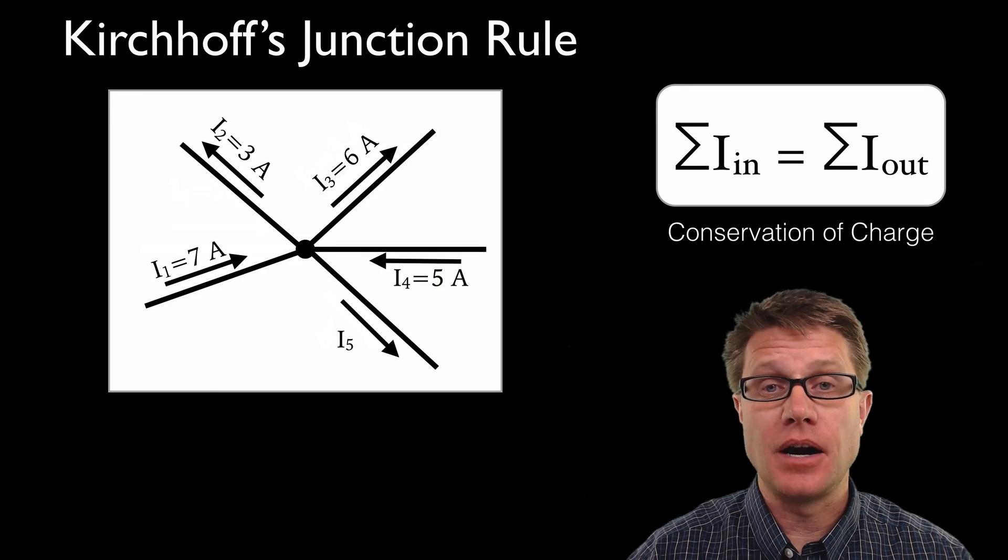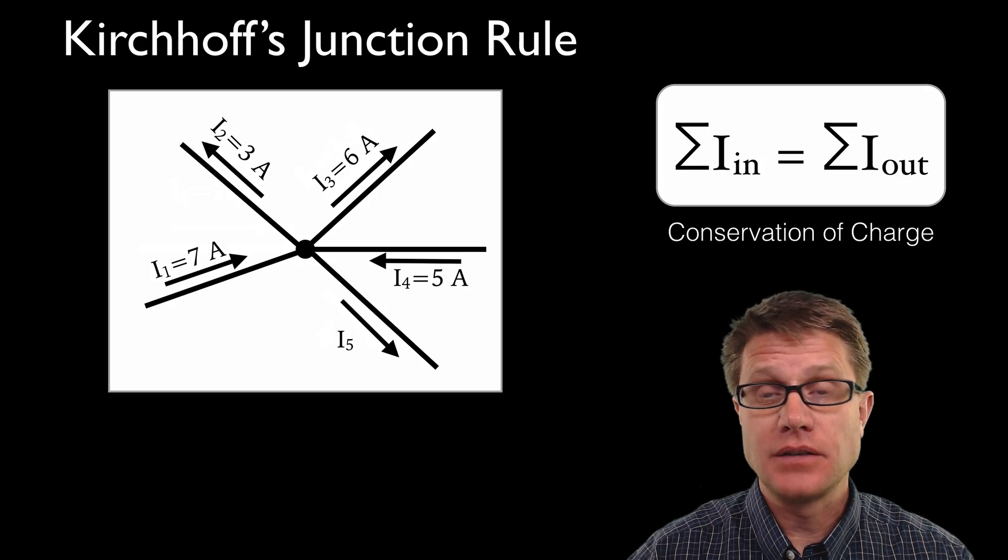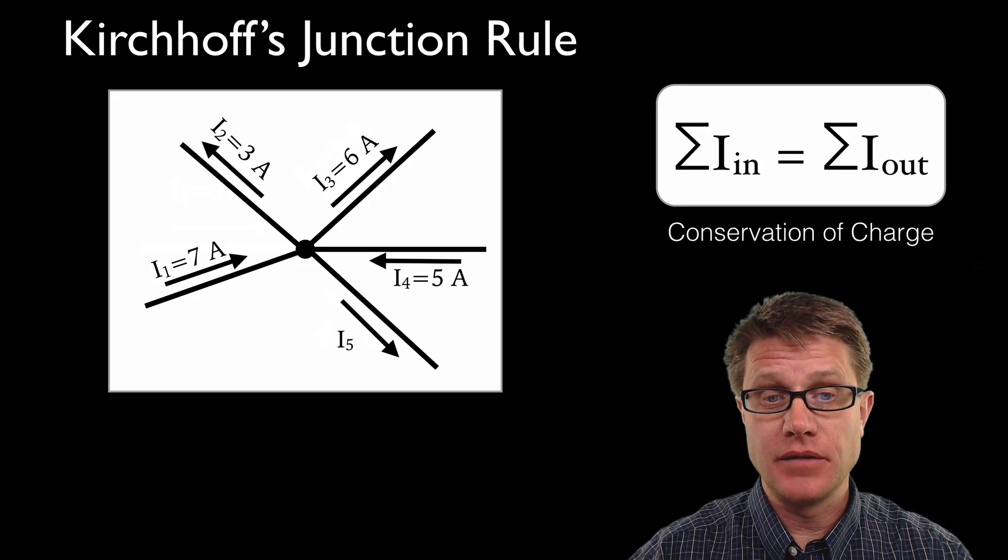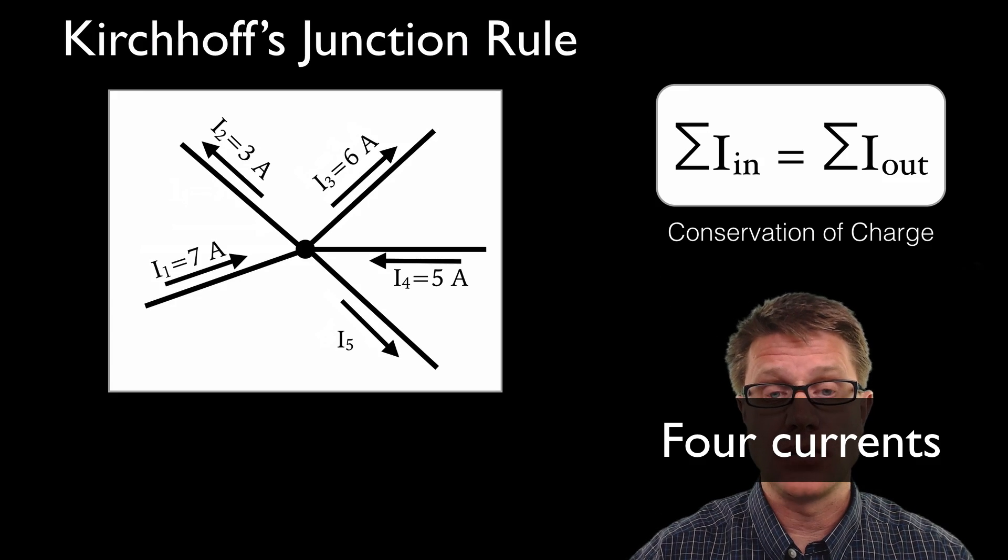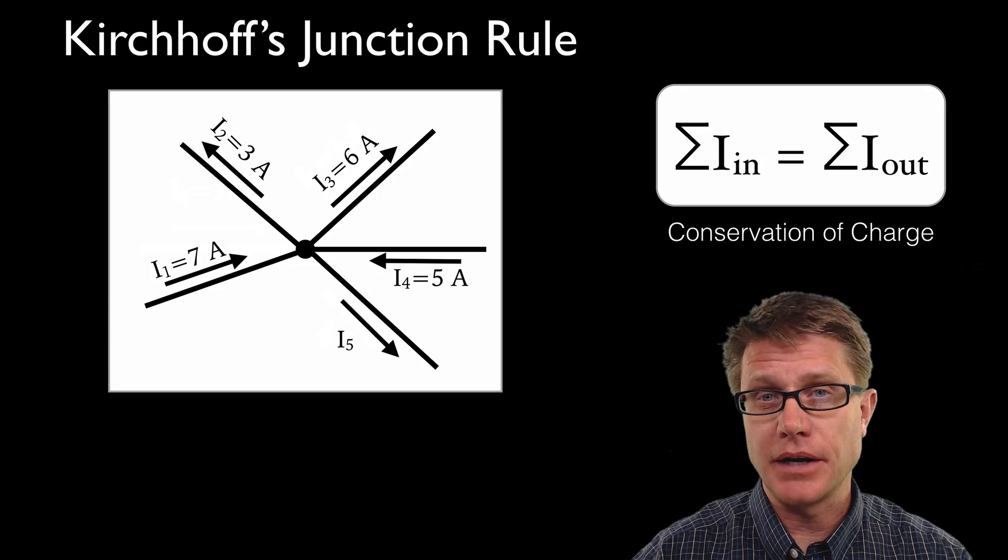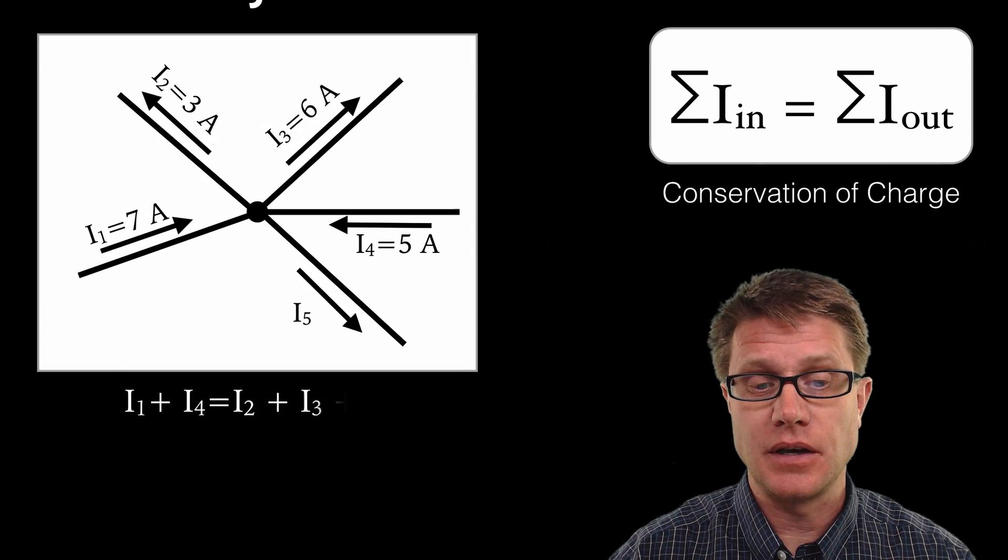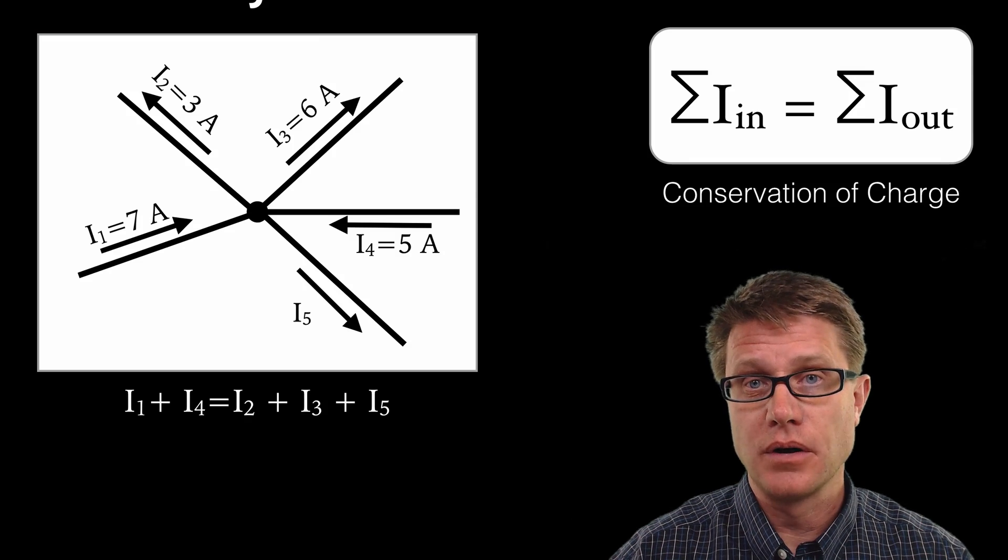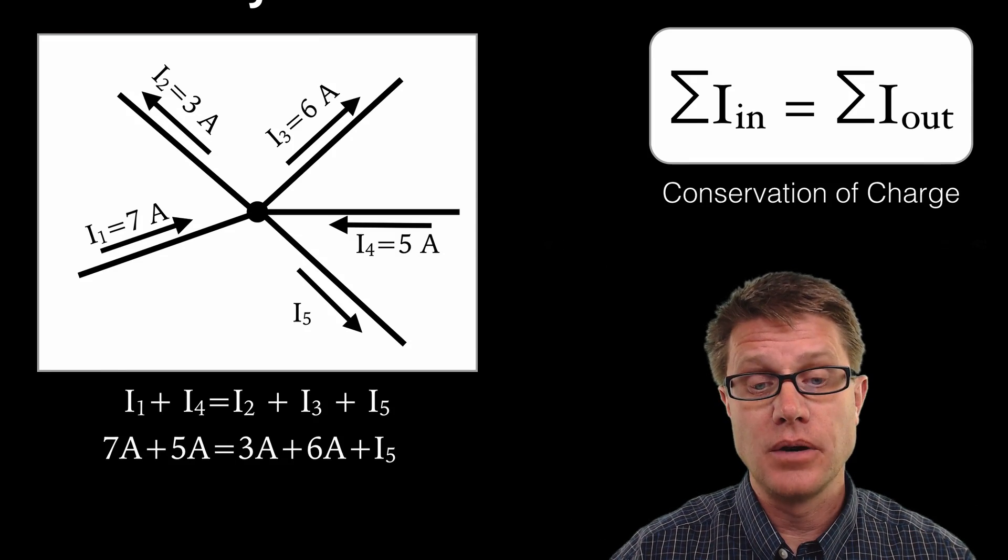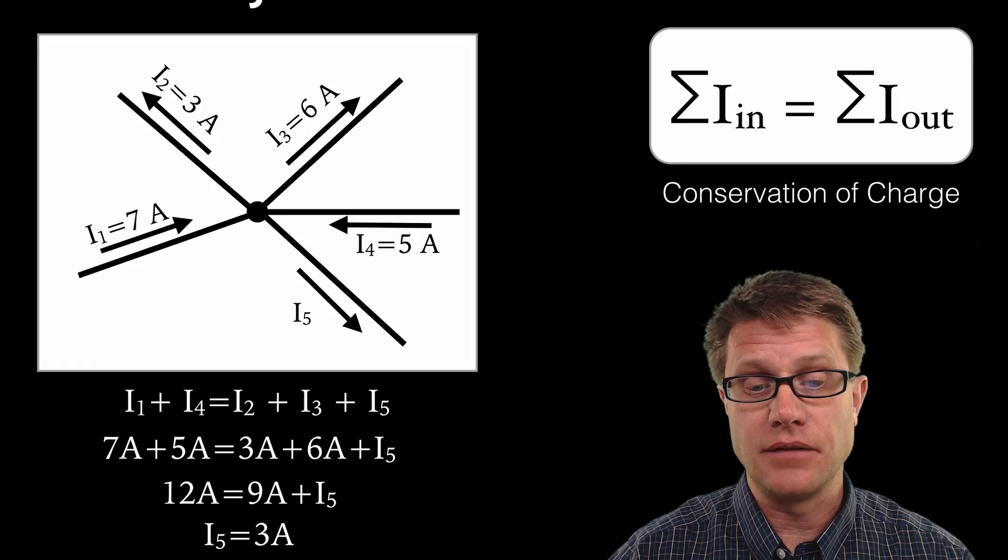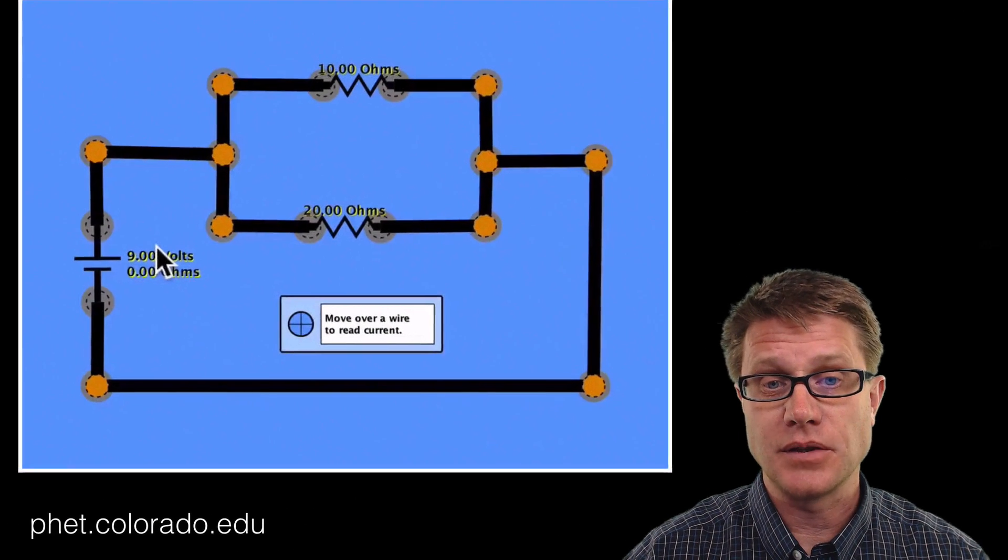We can even get very complicated problems like this. And so you may want to pause the video and try to solve this. I am giving you three currents and then you have to solve for the one that you do not know. So first of all write it out. What is the current coming in? I would say it is going to be I1 and I4. What is coming out? I2, I3 and I5. Write in what you know and then you can solve for what you do not know. In this case I5 should be equal to 3 amps.